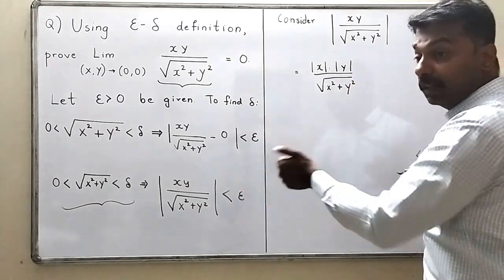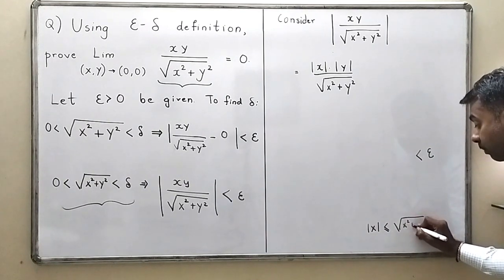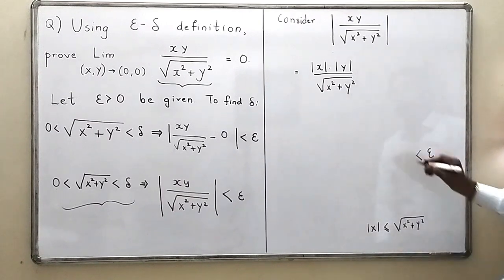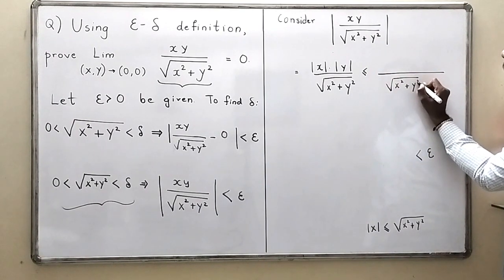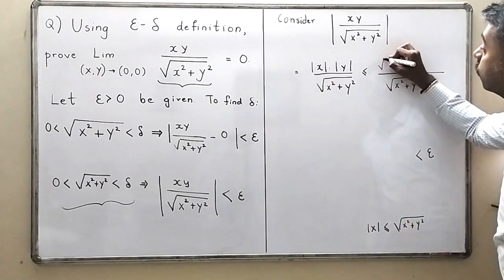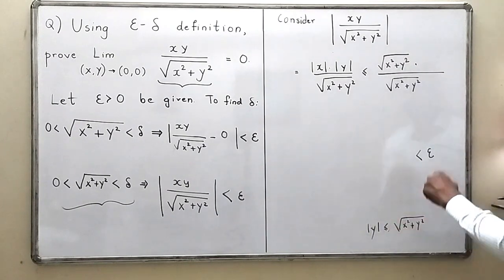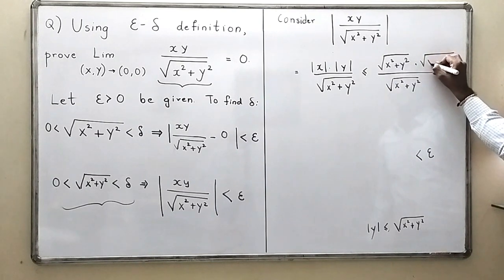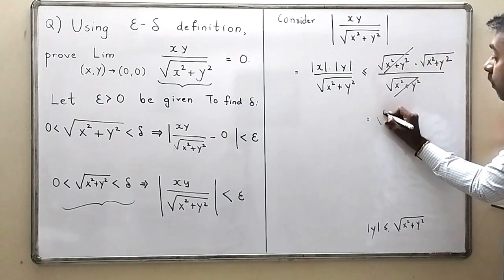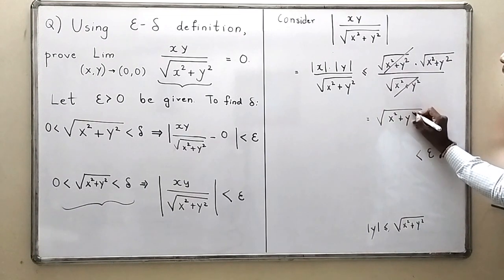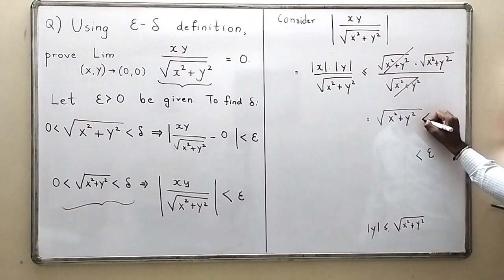So |x|·|y| / √(x²+y²) ≤ √(x²+y²)·|y| / √(x²+y²). One factor of √(x²+y²) cancels, and for |y| I also apply |y| ≤ √(x²+y²), giving me ≤ √(x²+y²). And since √(x²+y²) < delta, this whole expression is less than delta.